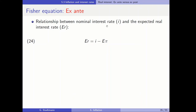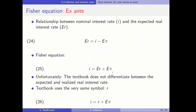Now let's introduce the ex-ante Fisher equation. The expected real interest rate equals the nominal interest rate minus the expected inflation rate. Solving for the nominal interest rate gives the ex-ante Fisher equation: the nominal interest rate equals the expected real interest rate plus the expected inflation rate. Note that the textbook uses the same symbol R for both ex-ante and ex-post real interest rates, which doesn't make too much sense, but I will stick to the textbook.